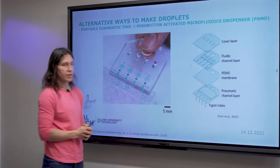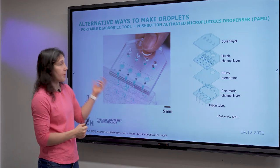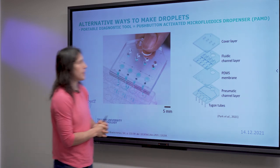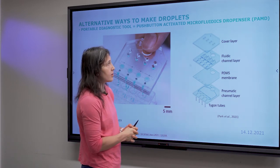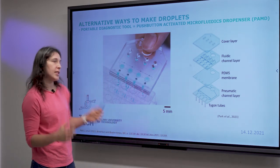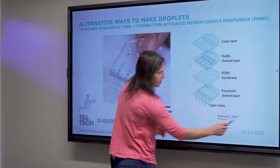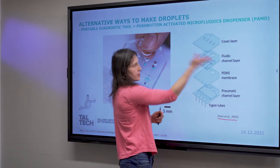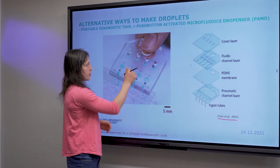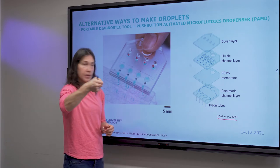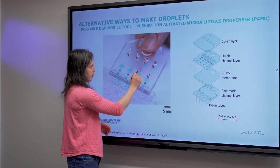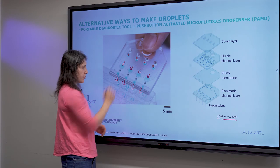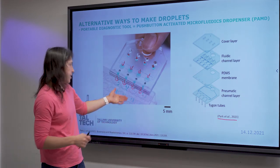Another alternative method, used in diagnostics, is a portable diagnostic tool called PEMT — a push-button activated microfluidic dispenser. It's a portable chip with different layers. You put in your sample, push a button, and by pressure you get nice droplets that are formed. You can then place those droplets wherever needed — for example, into a well plate for some kind of diagnostics.